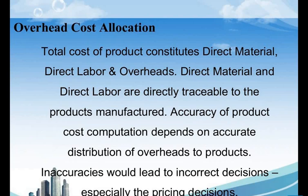Accuracy of product cost computation depends on accurate distribution of overheads to products. Inaccuracy would lead to incorrect decisions, especially for pricing decisions. So in order to take any decisions — particularly fixation of sales price and other prices — we need to ascertain overheads and total cost. For all these reasons, we need a cost allocation system in an organization.